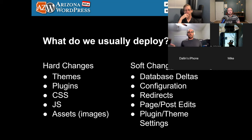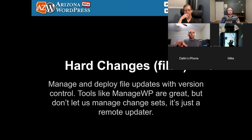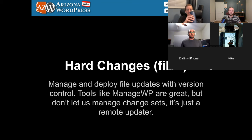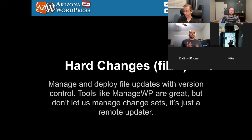Starting with hard changes: we manage and deploy file updates with version control. Tools like ManageWP are great but don't actually let us manage change sets — it's just a remote updater. The risk is you're not cataloging what changed, not testing the version, just going live and hoping everything works. We want to manage and deploy plugins, themes, and assets with version control — GitHub, GitLab, Bitbucket, or similar. Most of us are on Git these days.